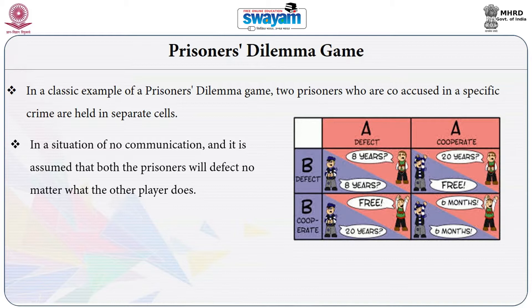When the prosecutor allows no communication between the two prisoners, the theoretical outcome is that both prisoners will defect no matter what the other player does. Both will try to implicate the other, landing in a situation where defection — not cooperation — is the dominant strategy. This is not the optimal outcome: had they cooperated and remained silent, they would have been acquitted, but instead they each get an eight-year jail term.